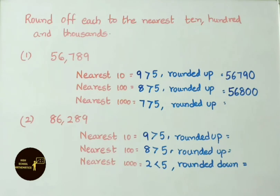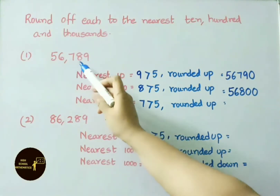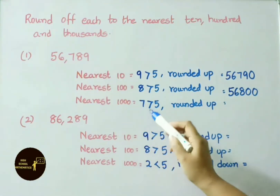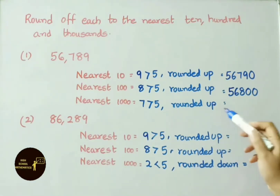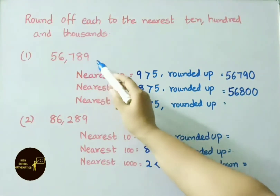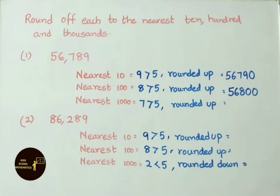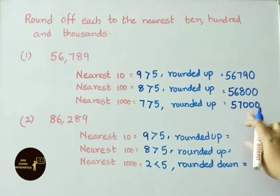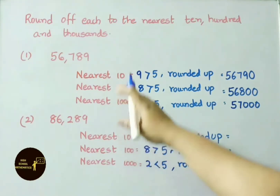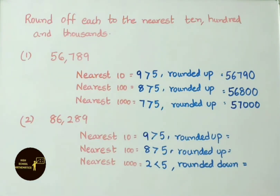Nearest 1000 for 56,789: the digit to the right of the 1000s place is 7. Since 7 is greater than 5, we round up. We make 789 into 000, and 6000 becomes the next 1000 — that is 7000. So our answer is 57,000, which is the nearest 1000 value for 56,789.